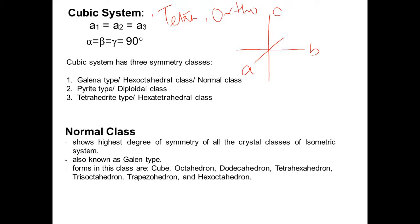These three systems constitute what we call the orthogonal systems — remember this for multiple choice questions. The cubic system has three symmetry classes: the normal class (also called galena type or hex octahedral type), the diploidal class (called pyrite type), and the hexa tetrahedral class (also known as tetrahedrite type).